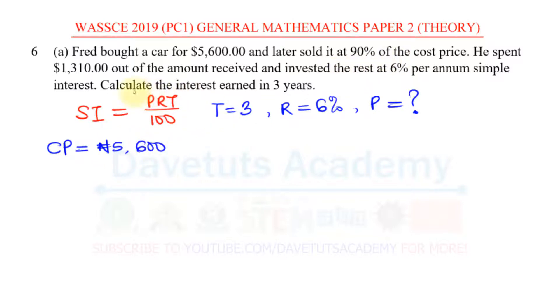Then we are told that he sold that car at 90% of the cost price. How do we express 90% of the cost price? We can say the selling price is 90% of cost price. Cost price is $5,600, and that will give us 90 over 100, that's the meaning of 90%, times $5,600.